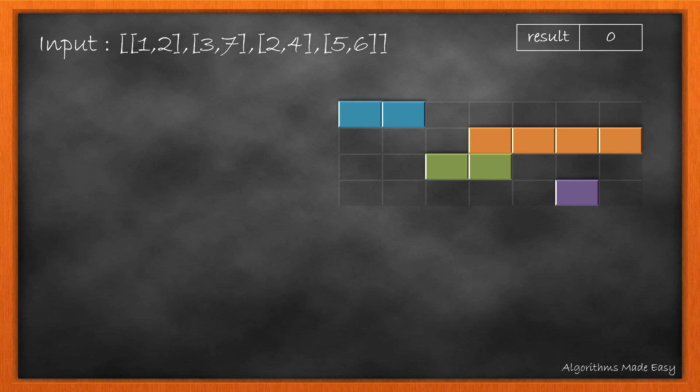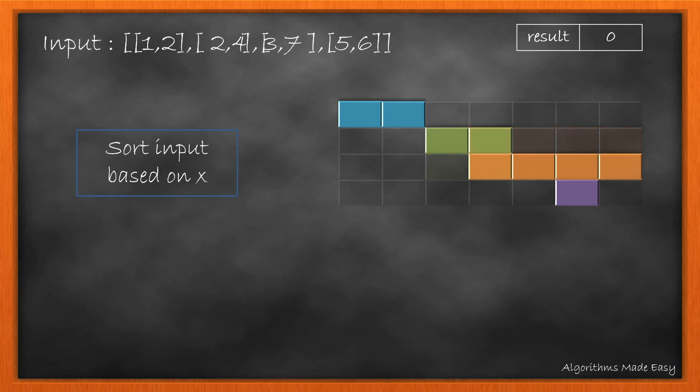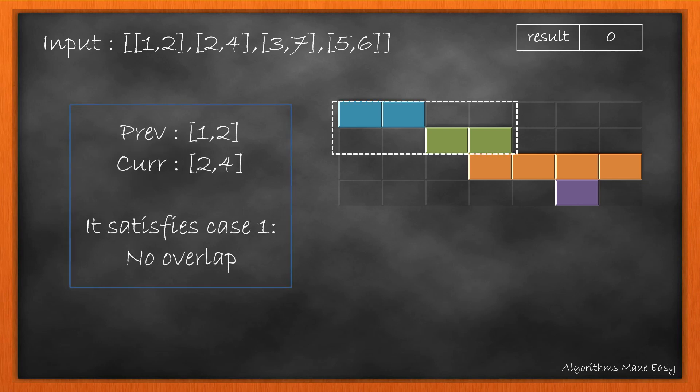Let's take this example. We will take a result variable to store the number of points we have removed. Firstly, we will sort the input based on the starting value of a point. So, the input will now look like this. Now let's start evaluating the conditions.